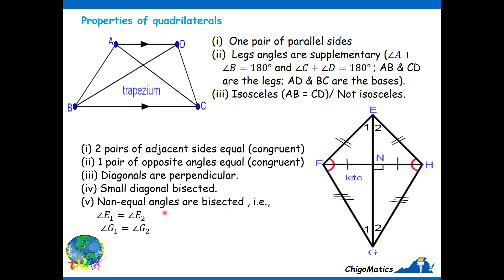Then non-equal angles are bisected. The non-equal angles are in E and G. Therefore, the longer diagonal bisects these angles. Meaning G1 equals G2, and E1 equals E2.